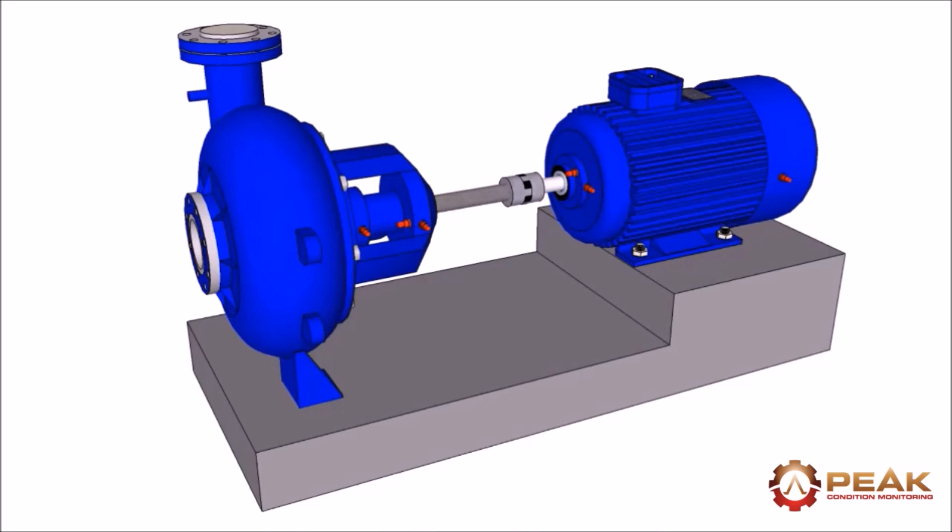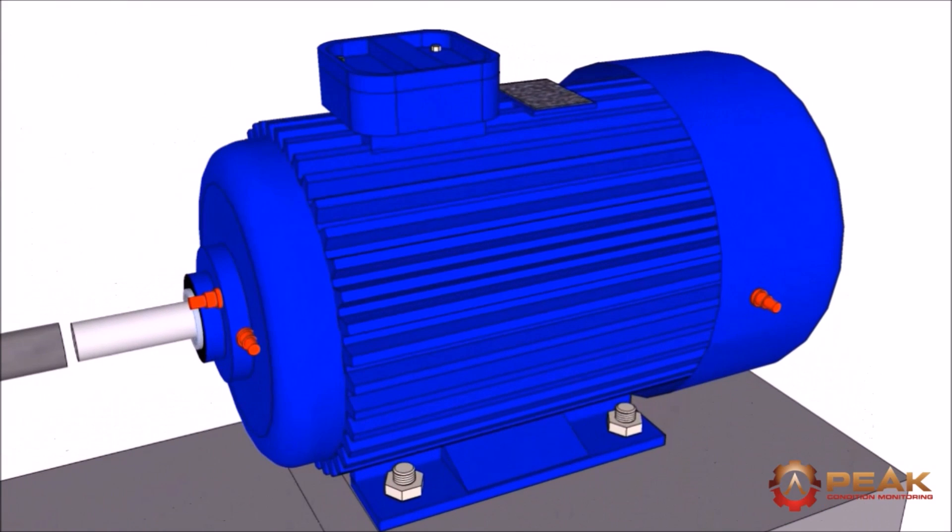In our first example we'll look at possible faults detected in this pump assembly. The problem is first picked up by a high 1x peak in the radial direction. To determine the source we decouple the motor coupling.